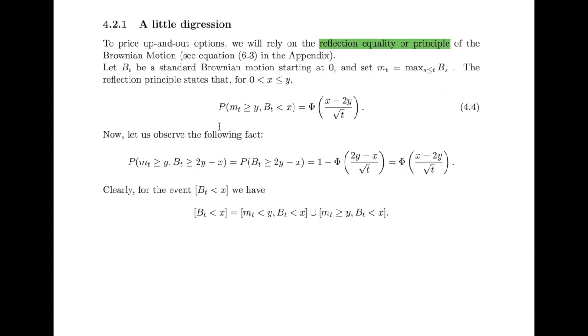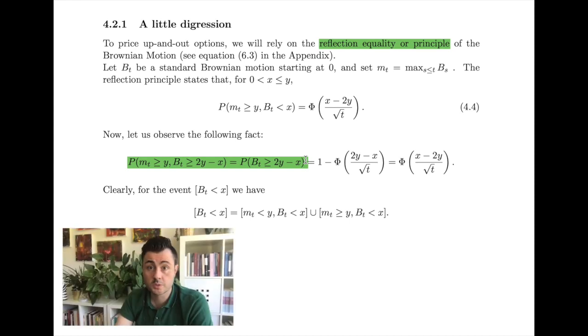Given the reflection principle, we can easily compute the joint probability of the maximum of a Brownian motion and of the Brownian motion itself. And this probability is easily expressed in terms of the CDF of a standard normal. It is important to notice that we are expressing the joint probability of the maximum and the Brownian motion, that is, a bivariate quantity, in terms of a univariate distribution, thanks to the reflection principle.